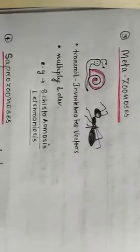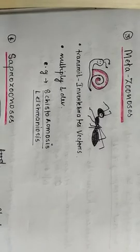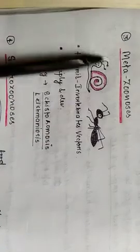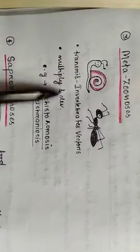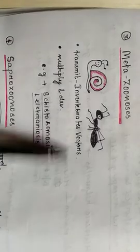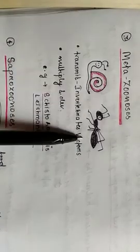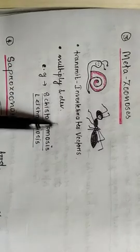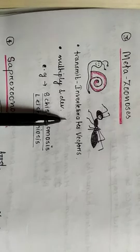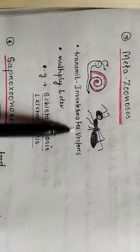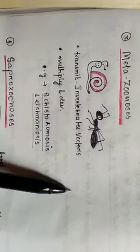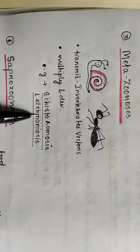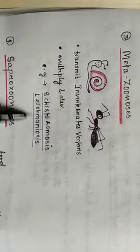The next zoonosis is metazoonosis. In metazoonosis, here the invertebrate transmits the disease. And in this invertebrate host, the parasite multiplies and develops. Such zoonosis is termed as metazoonosis. And after the development, the disease is transmitted to the host. The example of metazoonosis is schistosomiasis and leishmaniosis.